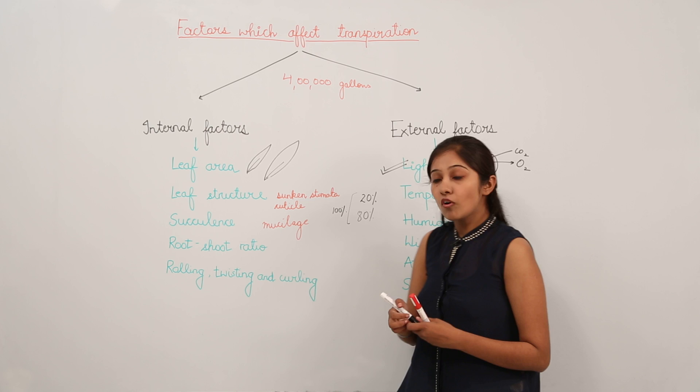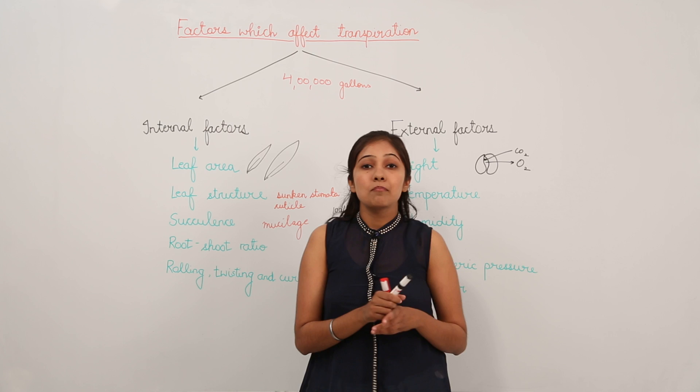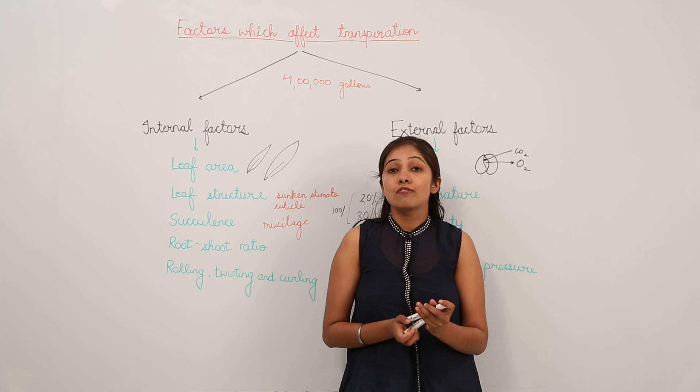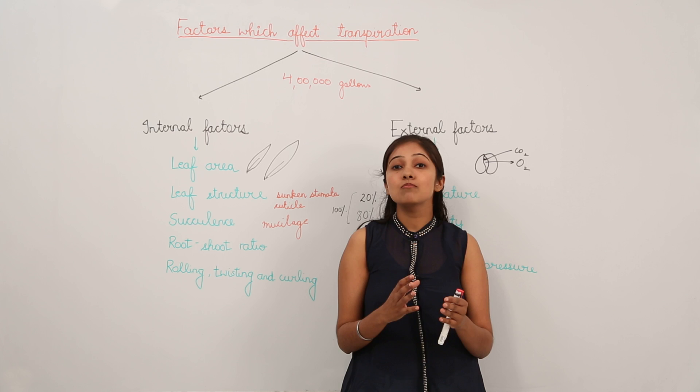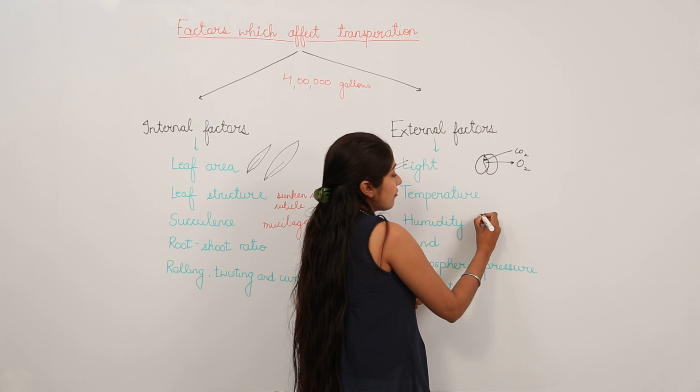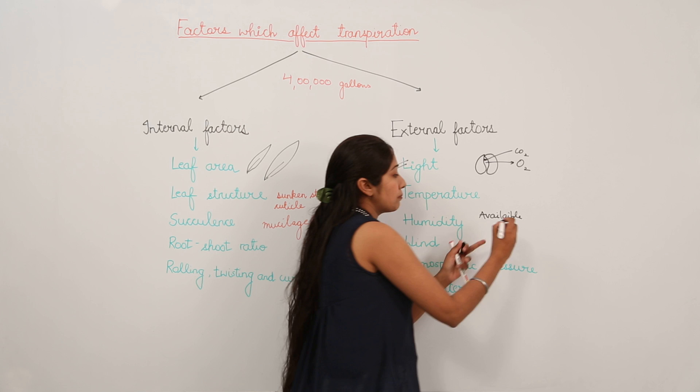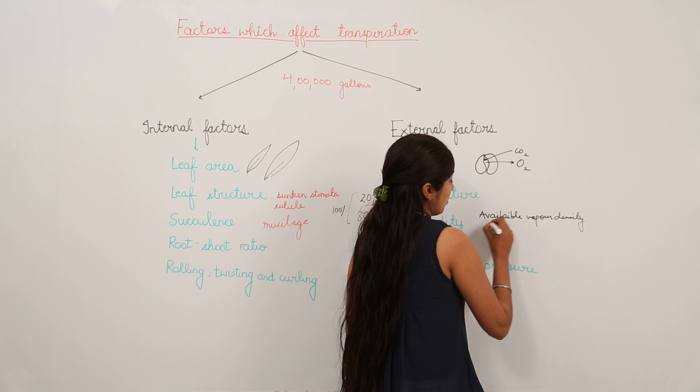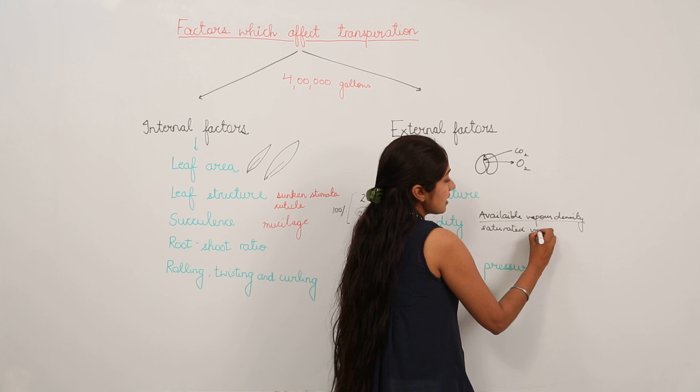Relative humidity is the amount of water vapor available in the air relative to the amount required for saturation, expressed as a percentage. The formula is: relative humidity = (available vapor density / saturated vapor density) × 100.